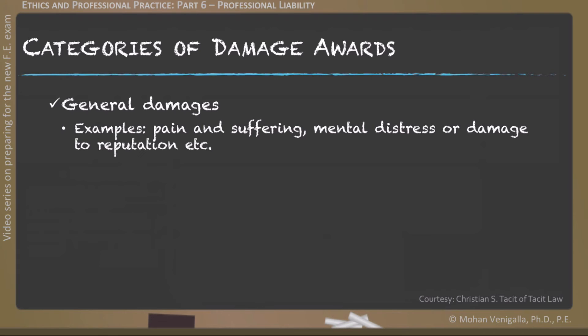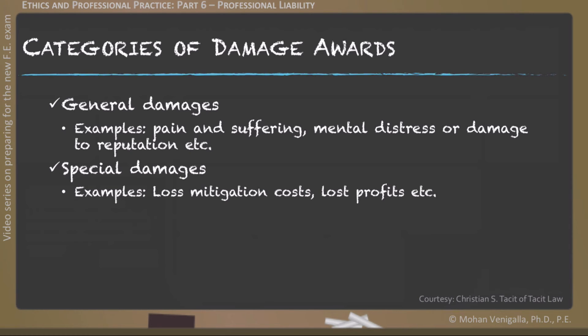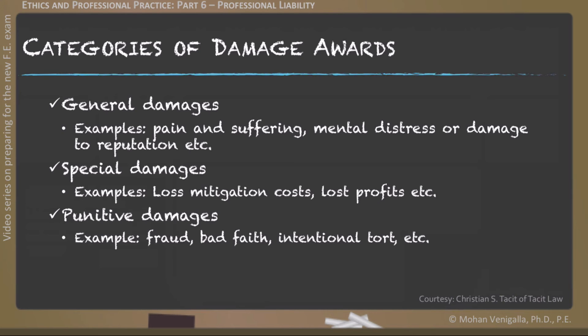There are three distinct categories of damage awards. First, general damages — compensation for non-monetary loss or harm suffered as a result of the tort that was foreseeable when committed, such as pain and suffering, mental distress, or damage to reputation. Second, special damages — intended to compensate for quantifiable monetary losses, including direct losses such as amounts spent to mitigate problems, and consequential or economic losses such as lost profits in a business. Third, punitive damages — awarded to punish certain behaviors such as fraud, bad faith, and intentional tort.